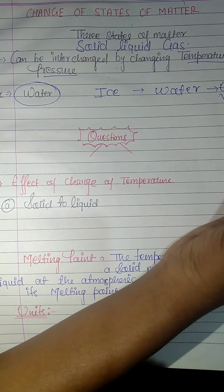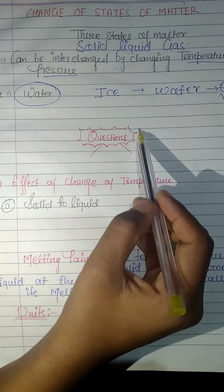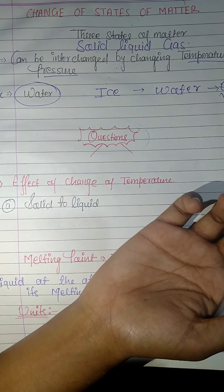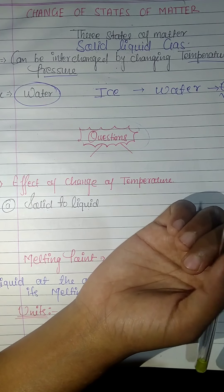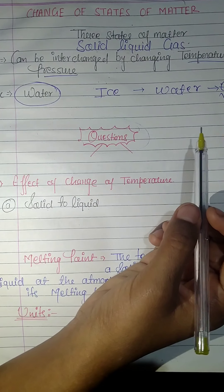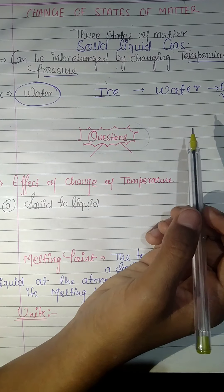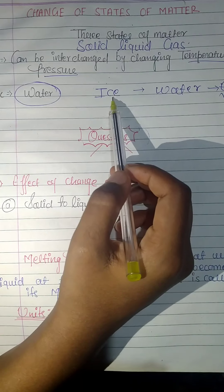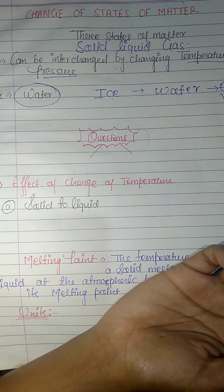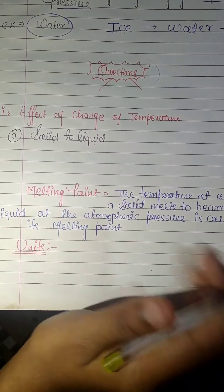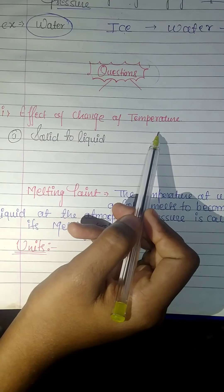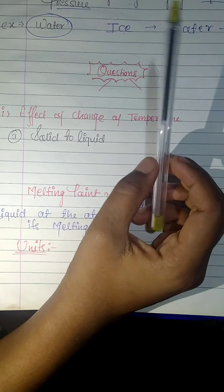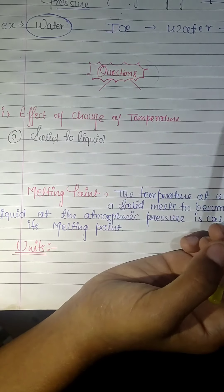So how does it happen? We've seen that temperature and pressure are the factors. A question might be arising in your mind: how do pressure and temperature play a role in changing one state of matter into another? What is exactly happening inside the matter when we change one into another? First, we'll see what is the effect of temperature and how temperature plays a very important role in changing one state of matter into another.